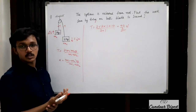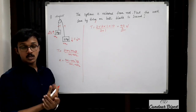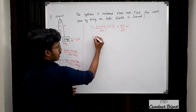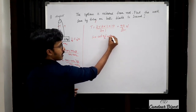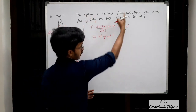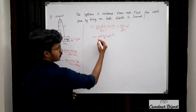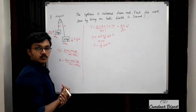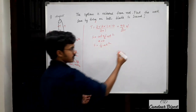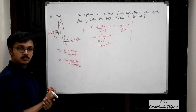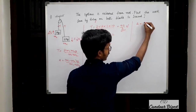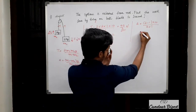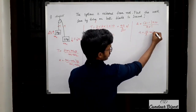Now we have to calculate work done, which is the product of force and corresponding displacement. The force is tension, so we need the displacement. Using s = ut + ½at², and since the system is released from rest (u = 0), we get s = ½at². We need acceleration: A = (M1 − M2)·g / (M1 + M2) = (2 − 1) × 10 / (2 + 1) = 10/3 m/s².